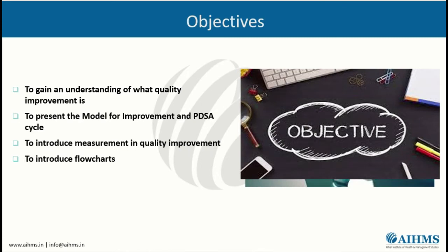Next we will discuss the objectives of quality improvement. There are many objectives. The first objective is to gain an understanding of what quality improvement is. Basically, quality improvement means the continuous improvement, day by day, of an organization. The second objective is to present the model for improvement and the PDSA cycle.